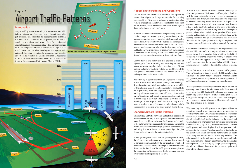Chapter 7: Airport Traffic Patterns. Airport traffic patterns are developed to ensure that air traffic is flown into and out of an airport safely. Each airport traffic pattern is established based on local conditions, including the direction and placement of the pattern, the altitude at which it is to be flown, and the procedures for entering and exiting the pattern. Additional information on airport operations and traffic patterns can be found in the Aeronautical Information Manual, AIM.